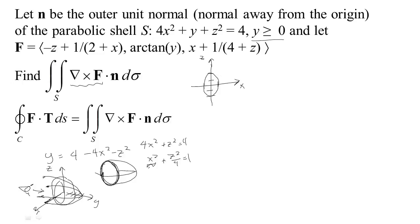To determine direction, look at the normal used in the flux integral — it says the outer unit normal, meaning the normal away from the origin. Using the right-hand rule: put your thumb in the direction of that outward normal and let your fingers curl naturally. As you move your hand along the surface to the edge, your fingers at the edge are curling in the direction where we start with z and move toward positive x. As seen from my viewpoint, that is clockwise. So we need a clockwise parametrization of this ellipse.